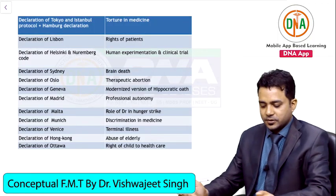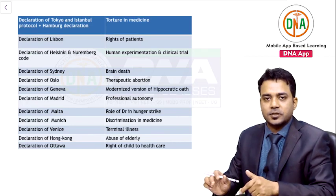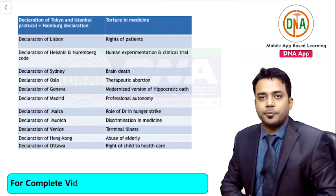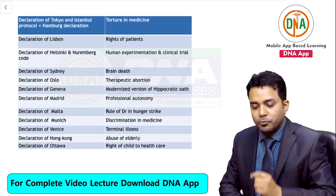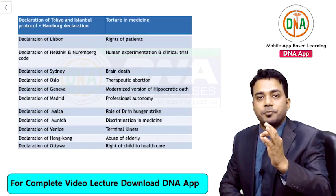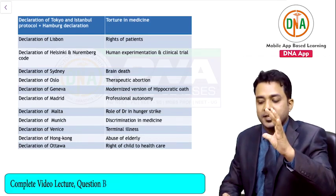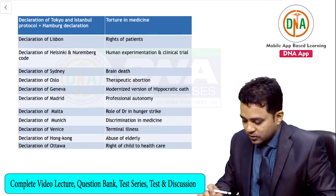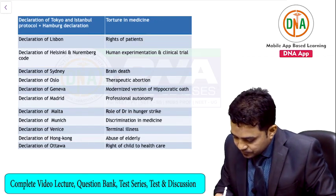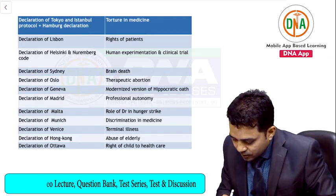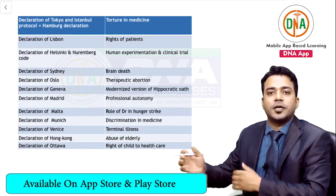Hello students, let us today discuss important tables of forensic medicine and toxicology — the most VIP ones — starting with the table of declarations. Questions from this part commonly ask things like: 'Declaration of Tokyo is related to...?'